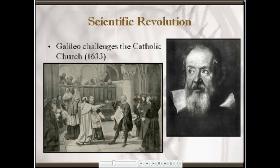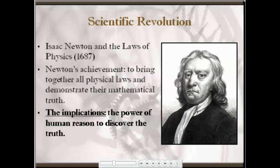Church officials obviously felt threatened and were worried that scientific research would replace the Bible as a source of knowledge. But scientific discoveries continued to appear throughout the 17th century. The most famous are probably those of Isaac Newton. He developed the law of gravity and different laws of physics, including the law of inertia, starting in 1687. His biggest achievement was to bring together all physical laws and demonstrate their mathematical truth — he was one of the first modern scientists to apply mathematical formulation to the interpretation of physical law. This allowed him to calculate or predict the results of physical movement and force. The mechanical function of the universe was no longer a mystery monopolized by God — human reason and analytical ability could be used to understand it.